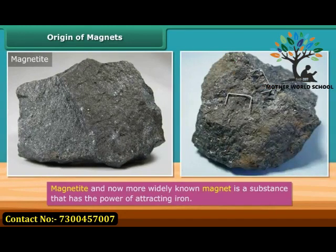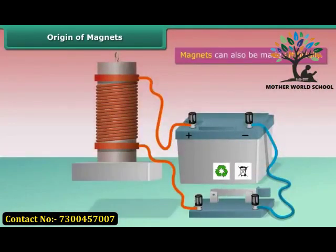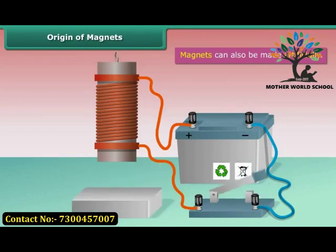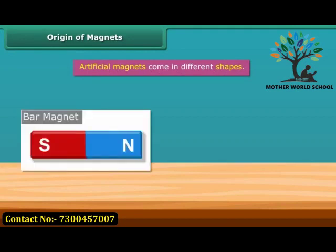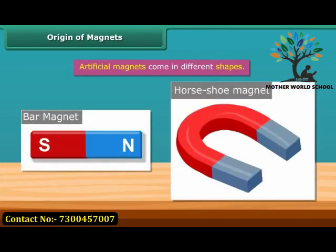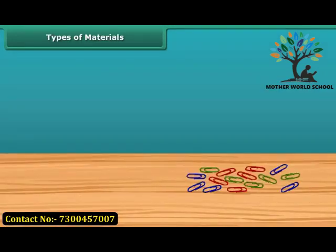A magnet is a substance that has the power of attracting iron. Magnets can also be made artificially; however, the process of making artificial magnets is a recent discovery. Artificial magnets come in different shapes, for example, a bar magnet or a shoe magnet.